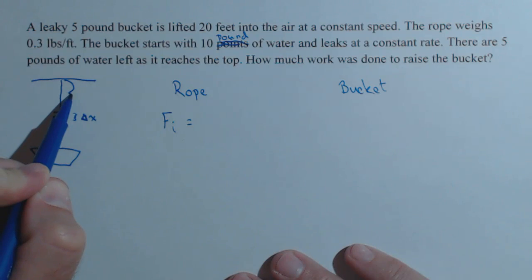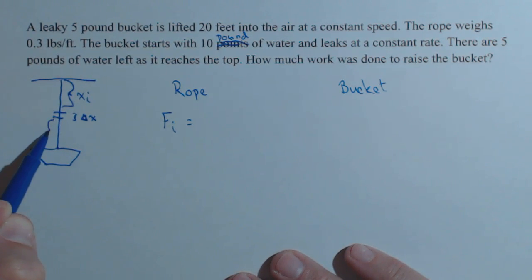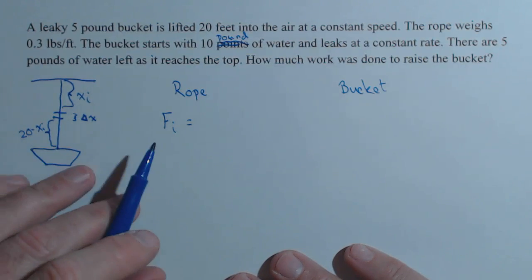So if I make this x sub i, then this distance here, the total distance is 20, so this is 20 minus x sub i here. If I label this x sub i, this would be 20 minus x sub i.